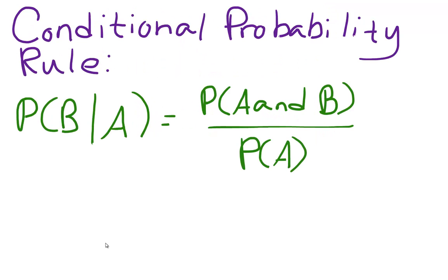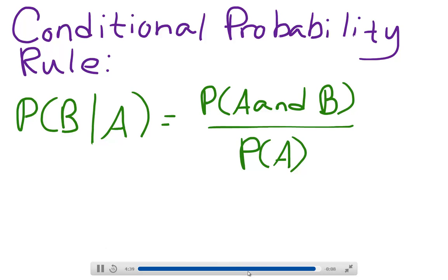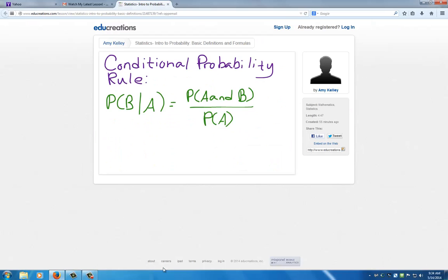Finally, the conditional probability rule states that the probability of B given A is equal to the probability of A and B divided by the probability of A. In the next video, we'll look at some examples of how these formulas can be applied to solve basic probability problems in statistics. Thank you.